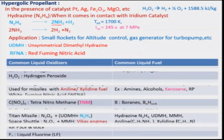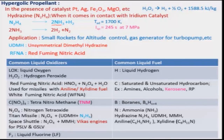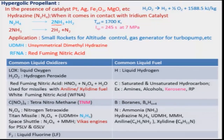Let us look at some of the common liquid oxidizers and common liquid fuels. Liquid oxygen and liquid hydrogen are being used properly nowadays as cryogenic engines. Hydrogen peroxide is being used. Red fuming nitric acid is basically a mixture of nitric acid, nitrogen tetroxide, and a certain percentage of water; it is used with fuels like aniline, xylidine, and UDMH.